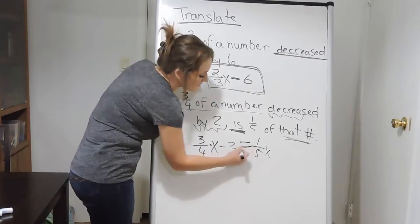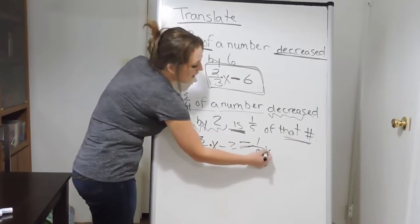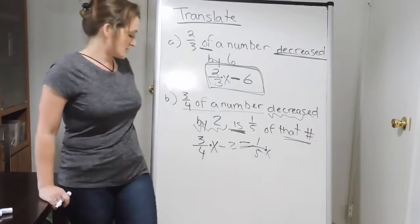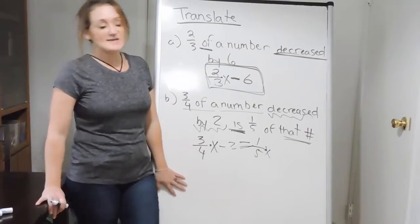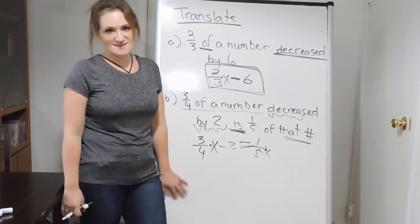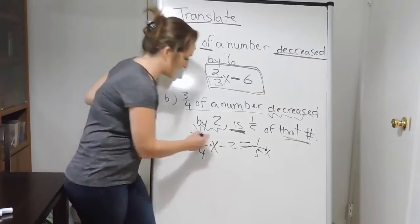So three-fourths of that number, decreased by two, is the same thing as one-fifth of that number here. So three-fourths x minus two is equal to one-fifth x. That's how that one would translate right there.